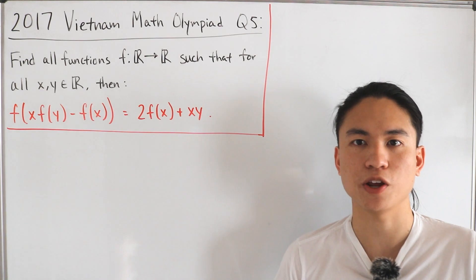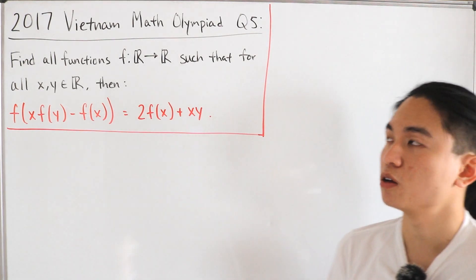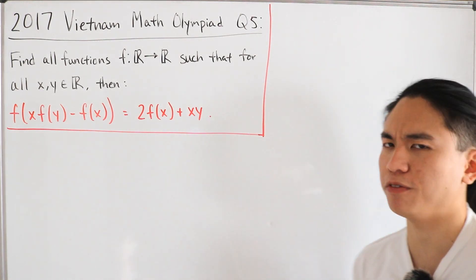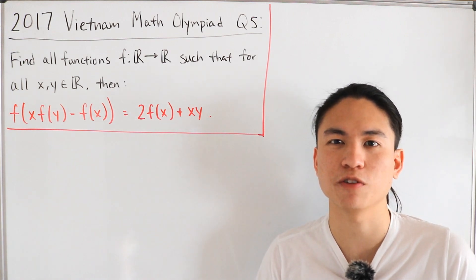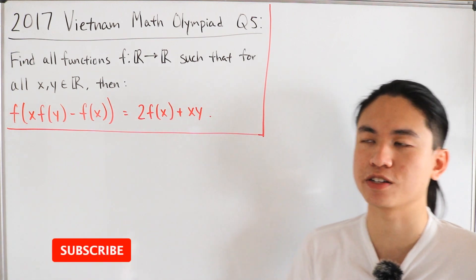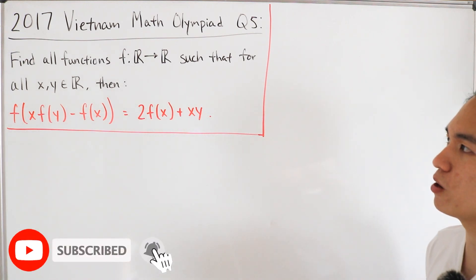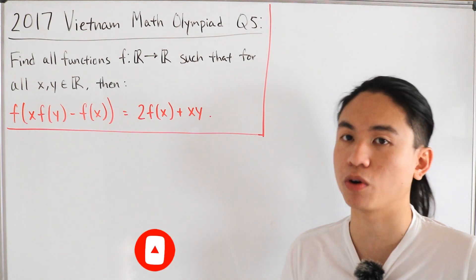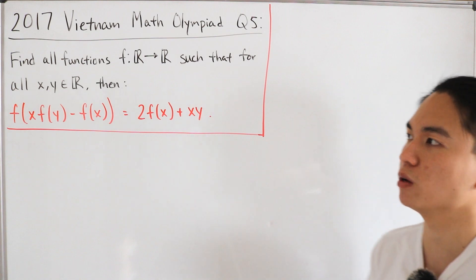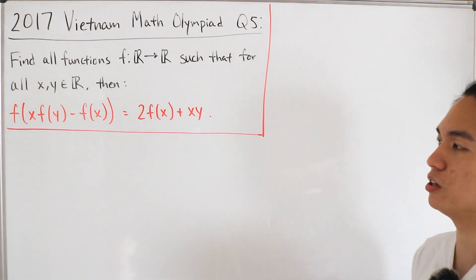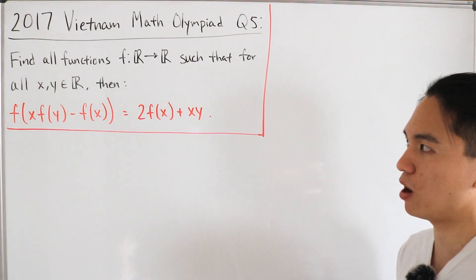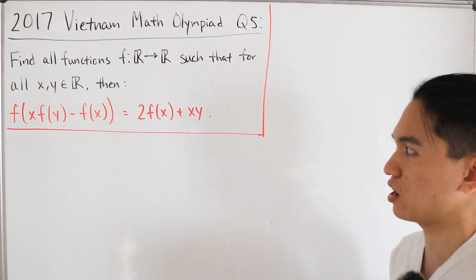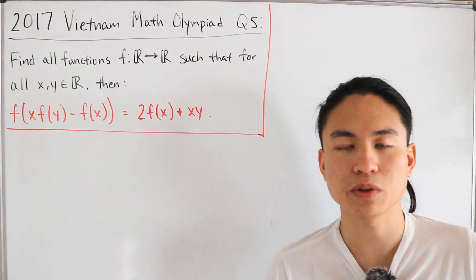We're looking at the 2017 Vietnam Math Olympiad, specifically question 1 of day 2. We want to find all functions f mapping from the reals to the reals such that for all x and y in the real numbers, the functional equation f(x)·f(y) - f(x) = 2·f(x) + x·y holds.